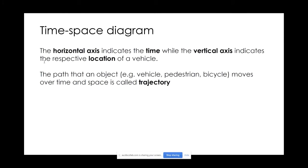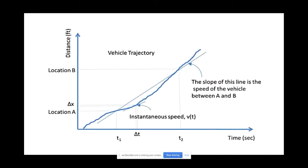We draw trajectories in the time-space diagram. This is an example where the x-axis is time and the y-axis is distance or space. This trajectory shows the movement of a single vehicle as it moves over time and distance. The vehicle starts at time t0, at location 0, and as time moves, the vehicle also moves. This could represent any moving object — a person, an ant, a bird — anything that moves can be represented as a trajectory in a time-space diagram.